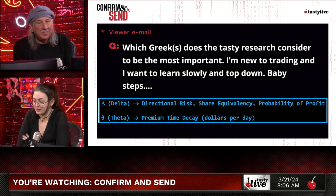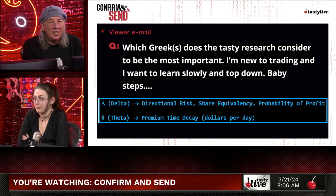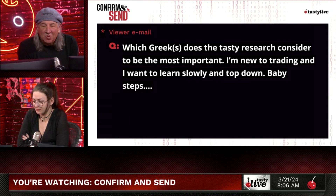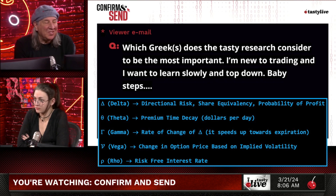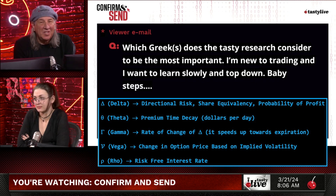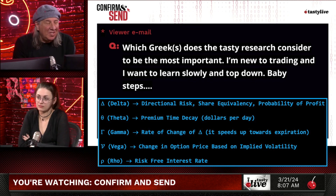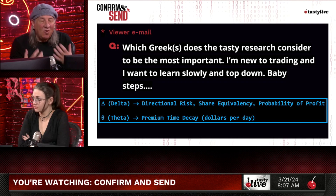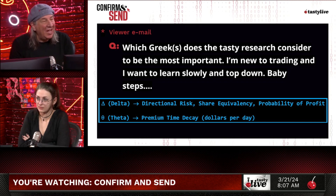Delta then theta. First of all, you don't have to worry about volatility or interest rates, so we can eliminate those two. The reason delta is so important is because to understand your risk you have to have some kind of share equivalency — you have to have some data. Delta is probably the most important just because it normalizes and it's easy to think through: this is X number of shares.